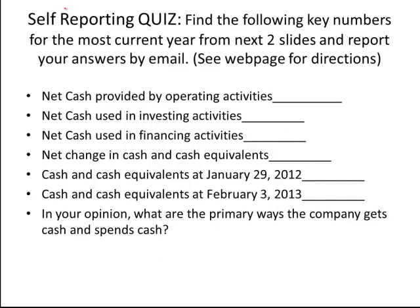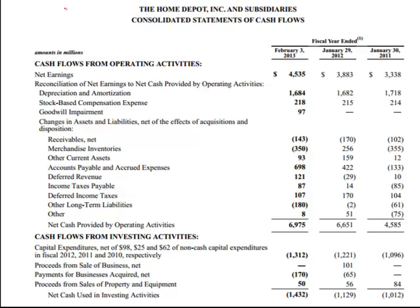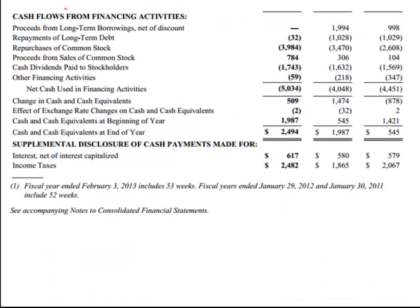Now it's your turn. Here's your self-reporting quiz — find these numbers for Home Depot, which goes over two pages, and send them in. Here's Home Depot's cash flow statement, and here's the second page. All the best — see you.